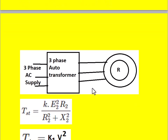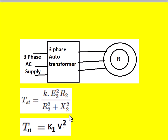The starting torque equation for the three-phase induction motor is: T = K × E2² × R2 / (R2² + X2²), where E2 is the rotor induced EMF when the rotor is at standstill. This value depends upon the applied voltage per phase on the stator. R2 is the rotor resistance per phase, X2 is the rotor reactance per phase, and both R2 and X2 are constants, as is K.